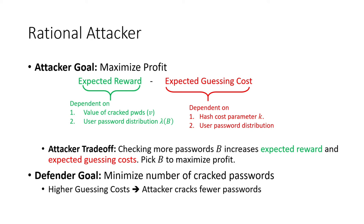What does a rational attacker do when facing key stretching? We model an attacker whose goal is to maximize profit, where profit equals expected reward minus expected guessing costs. Expected reward depends on the value of a cracked password and the probability of cracking it within b guesses. Expected guessing costs depend on the hash cost parameter and the password distribution. The attacker faces a trade-off: checking more passwords increases expected reward but also increases guessing cost, so the attacker picks a budget b to maximize profit.